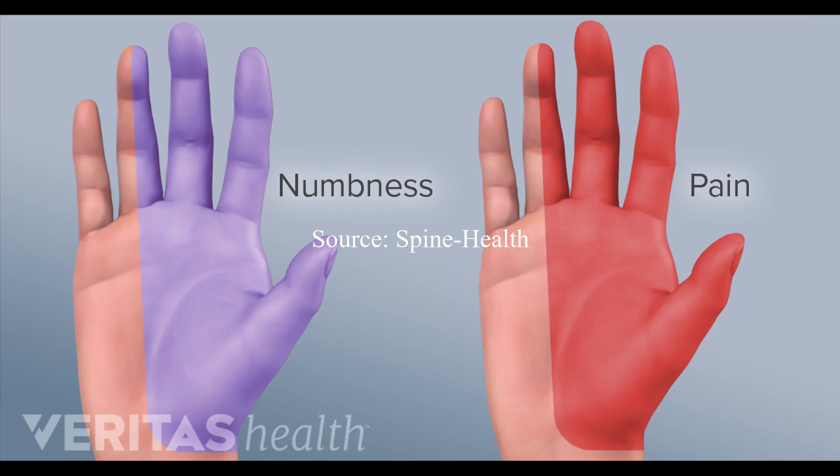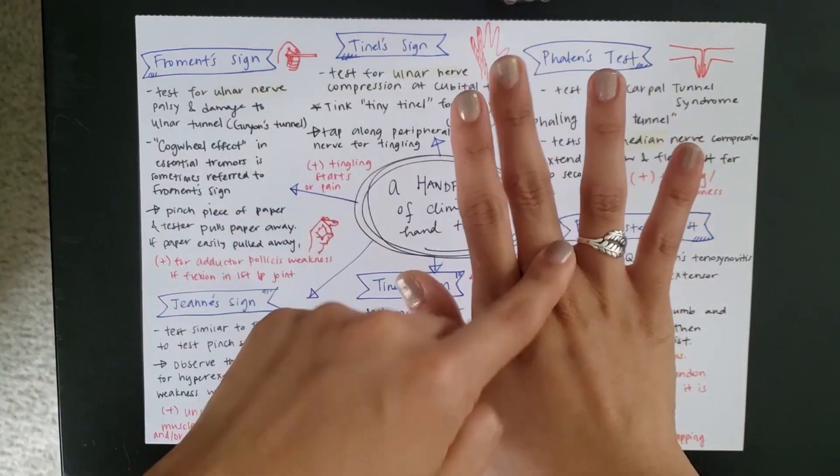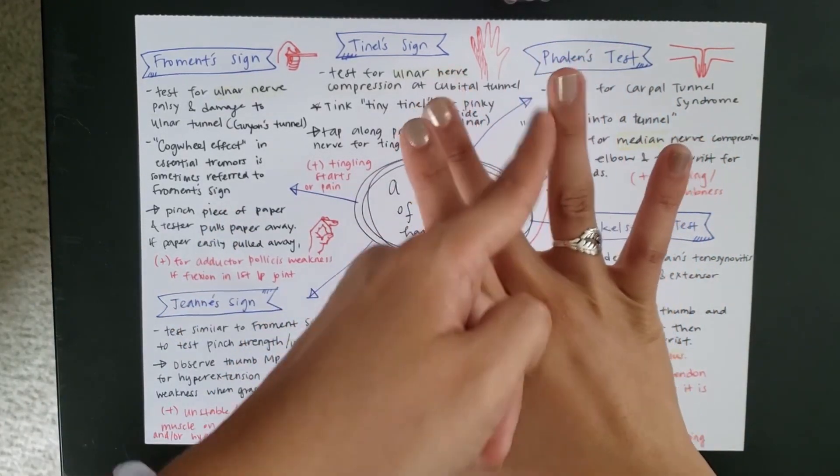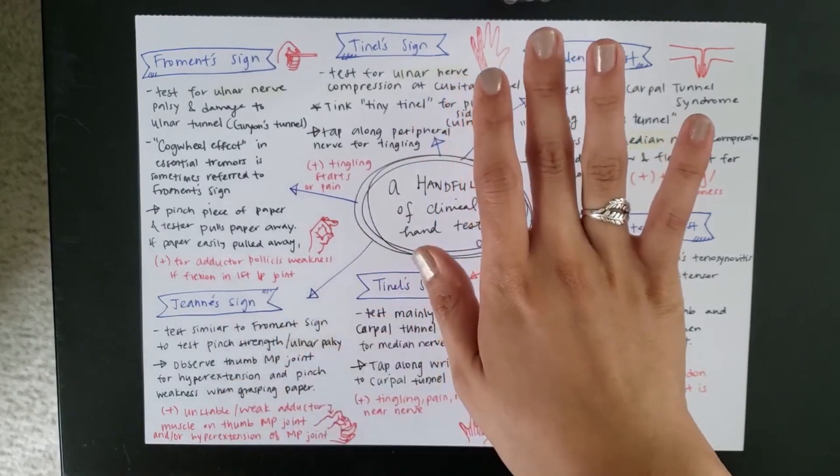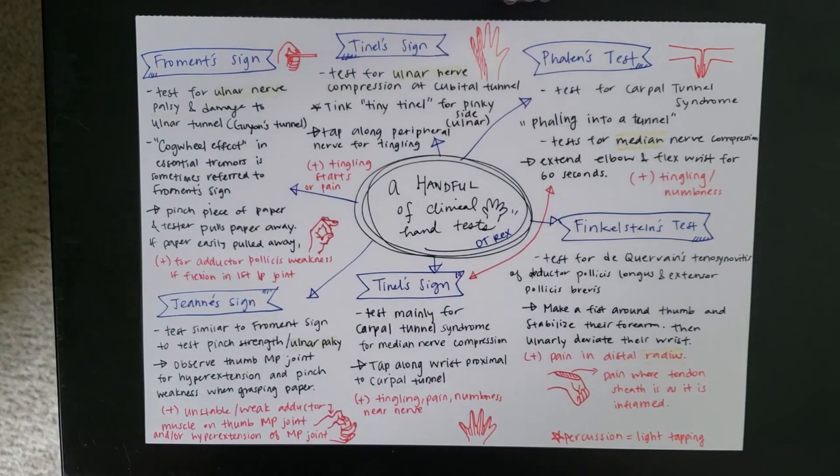numbness near that nerve. And I drew a little hand right here to indicate where you'd feel that numbness. Because this is where the median nerve would innervate. So, it would be these first three fingers and the radial half side of your ring finger. So, that's where you would feel it. So, Tinel and Phalen carpal tunnel. So, moving on to the other test for the Tinel.